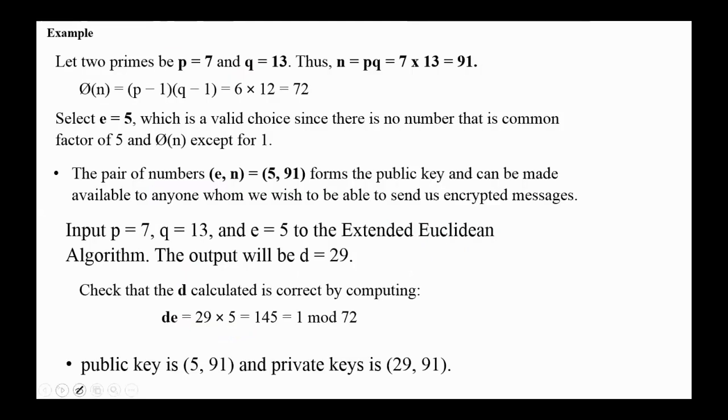Suppose, for example, that we have, for simplicity, two small prime numbers, p equals 7 and q equals 13. So n equals 7 times 13, which is 91. The totient function is 72, which is p minus 1 multiplied by q minus 1. We can select e, for example, 5. And this is a valid choice since there is no number that is a common factor of 5 and the totient function phi, except for 1. The pair of numbers 5 and 91 forms the public key and can be made available to anyone whom we wish to be able to send us encrypted messages.